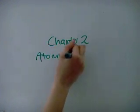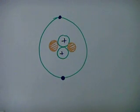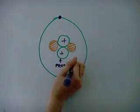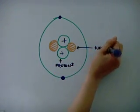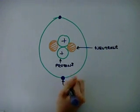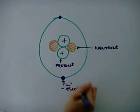Chapter 2: Atomic Structure. The positively charged particles are protons, whereas the particles with no charge are neutrons. The negatively charged particles are electrons.